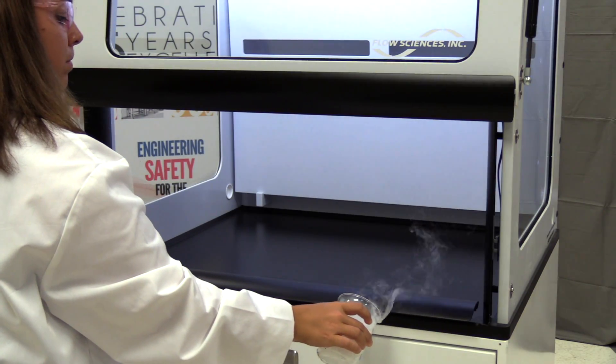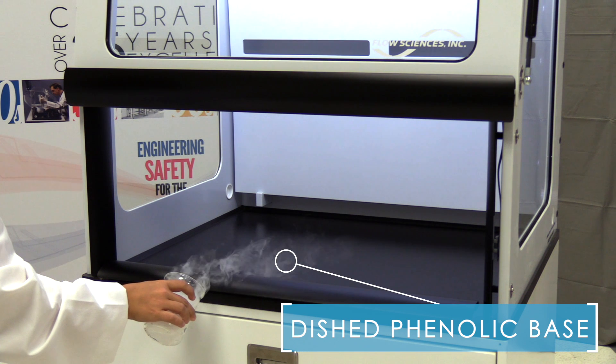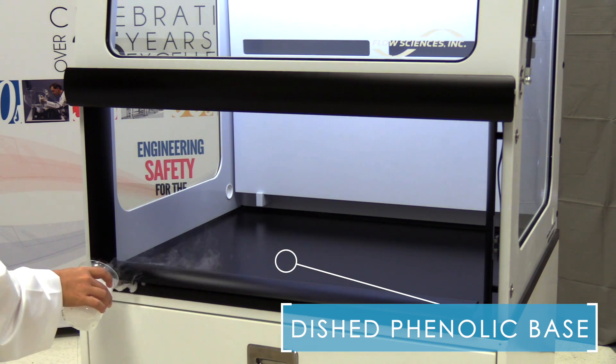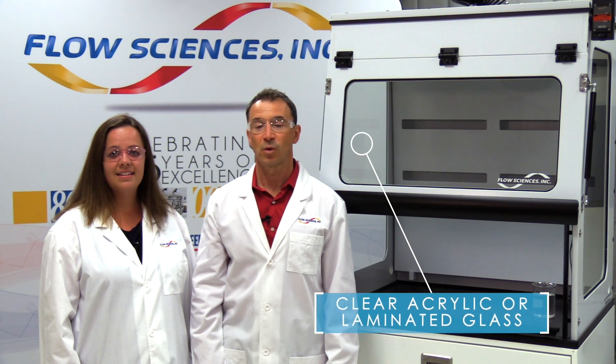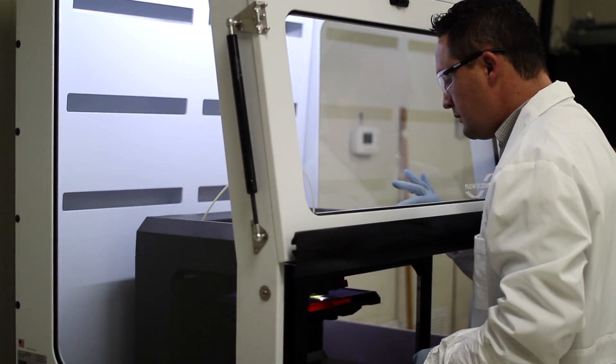The chemically resistant phenolic base is dished to contain spills and coated to protect the work surface from harmful chemicals. The unit also features clear acrylic or laminated glass panels, as well as LED lighting to maximize visibility.